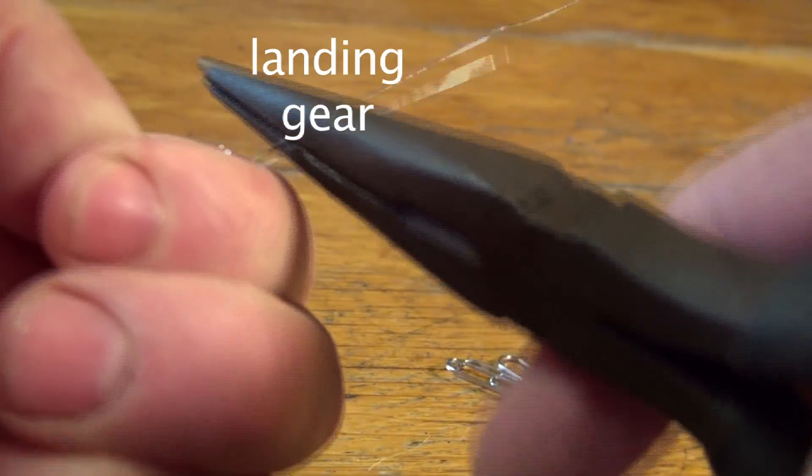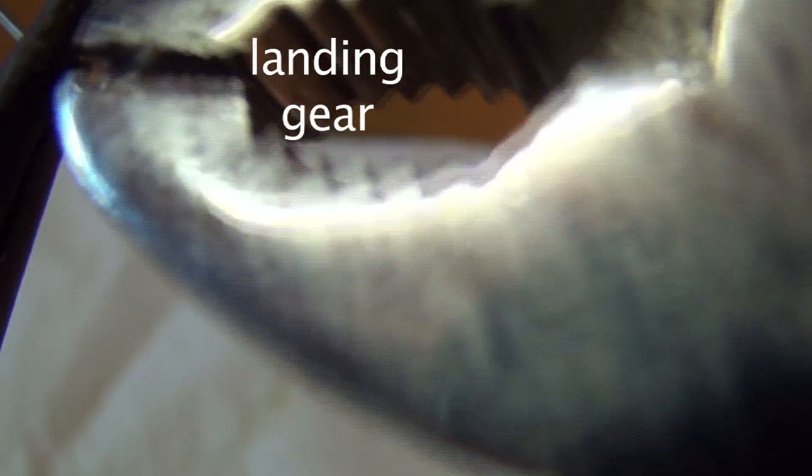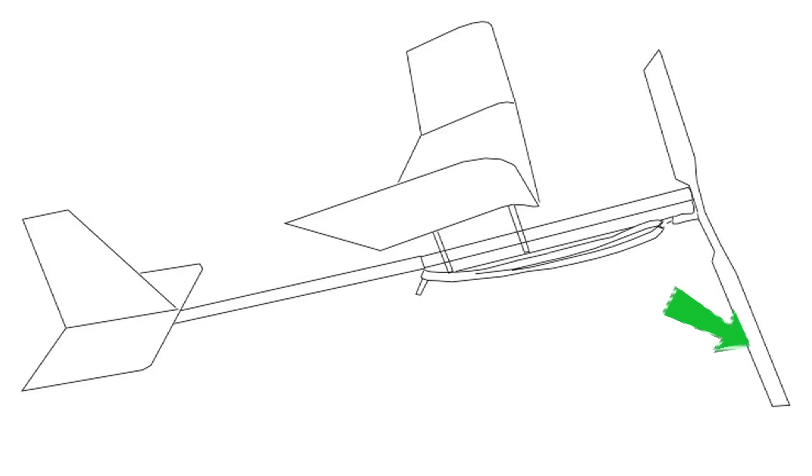Usually, we obsessively reduce weight in planes. But there are two places where weight helps flight stability: in the very front and as low as possible. So landing gear, made from small paper clips, does double duty.